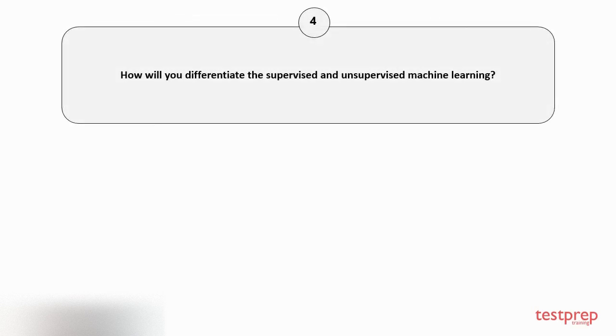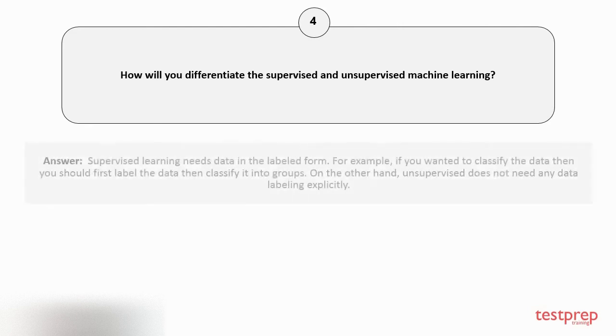Question number four: How will you differentiate supervised and unsupervised machine learning? Supervised learning needs data in the labeled form. For example, if you wanted to classify the data, then you should first label the data then classify it into groups. On the other hand, unsupervised does not need any data labeling explicitly.